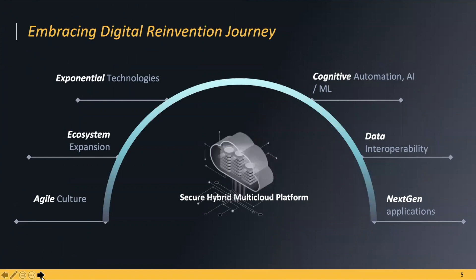So how do we really embrace the digital reinvention journey? With all these changes, it's very difficult to lay the foundation without having a secure hybrid multi-cloud platform. That platform is going to build a culture of agile innovation — agility and flexibility will be key. On top of that platform, we have to leverage exponential technologies: cognitive automation, AI, ML, IoT, blockchain, intelligent workflows, and next-gen applications, all fueled by data to drive predictive analytics and proactive intelligence to help clients achieve their cognitive digital reinvention journey.